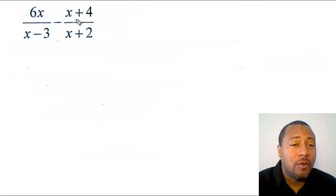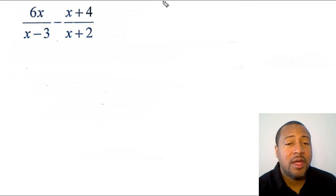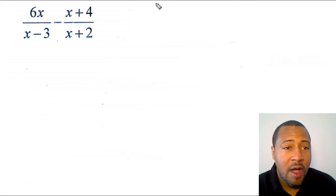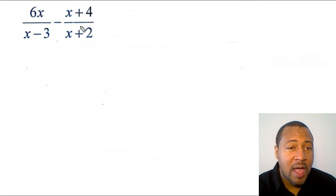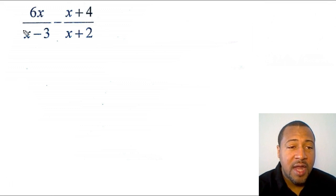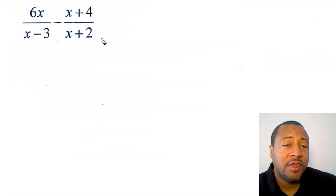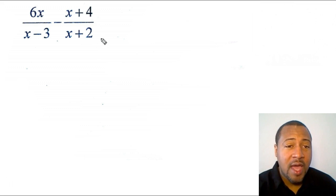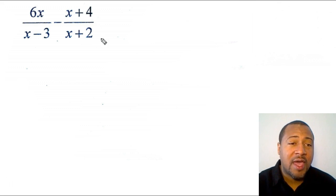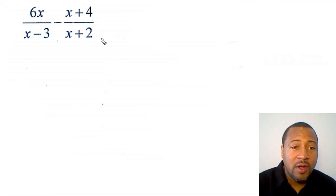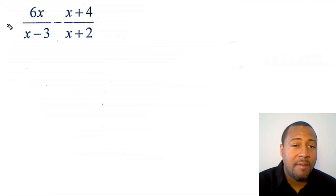The method I'm going to use is I'm going to cross multiply and then multiply the denominators. That's how I go ahead and try to solve this problem, because I have to make sure my denominators are the same so I can add my numerators and then solve the problem.